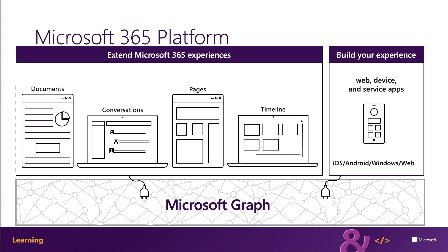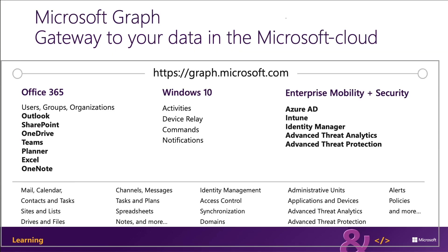Microsoft Graph is the gateway to your data in the Microsoft Cloud. The Microsoft Cloud includes multiple services and data types from Office 365, all considered part of the Microsoft 365 platform. Developers can integrate the signed-in user's email, calendar, contacts, and tasks into custom apps, as well as content in SharePoint lists, files, document libraries, OneDrive, channels and content within Microsoft Teams, and users within Azure Active Directory.